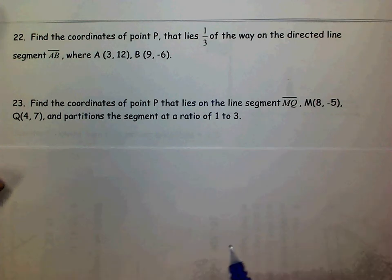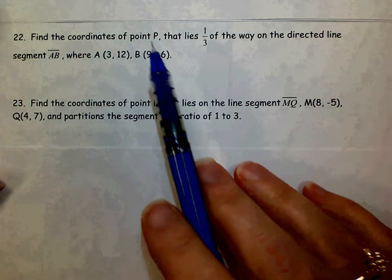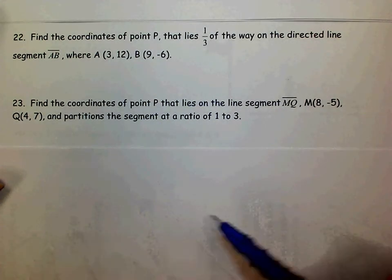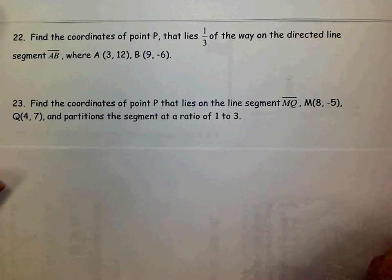On number 22 and 23, we're finding the coordinates of point P that partitions a segment in a given fraction or ratio.